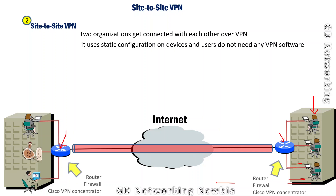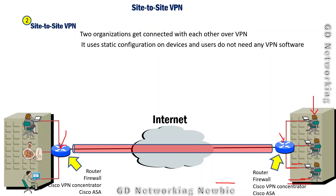The communication through those two points will be secure. The devices used for creating the VPN tunnel between two sites can be routers, firewalls, a VPN concentrator, or a Cisco ASA.